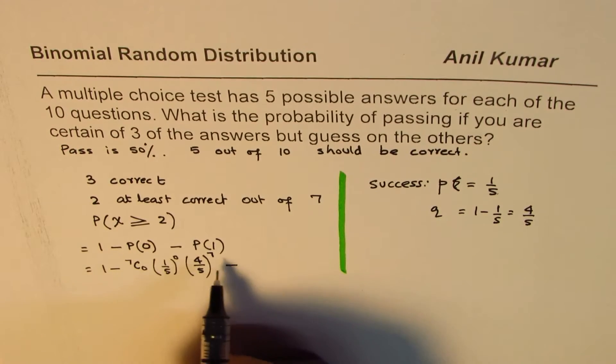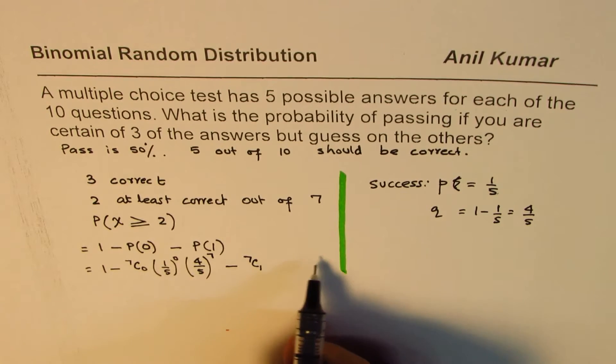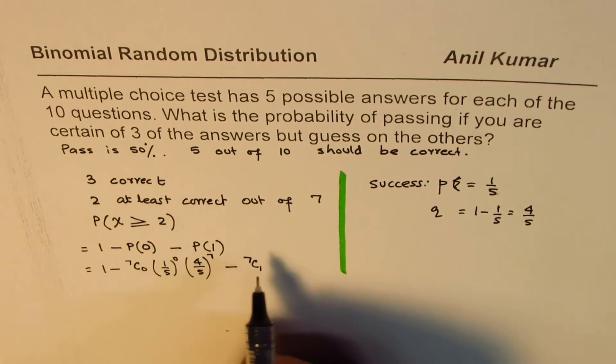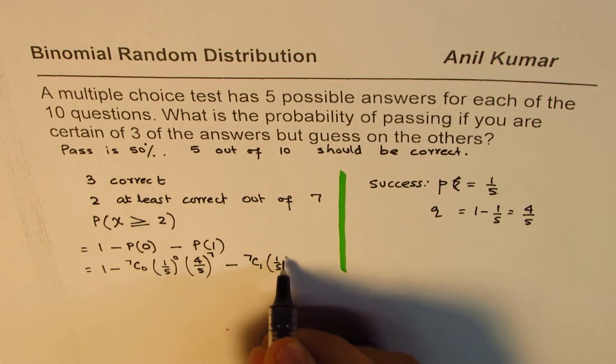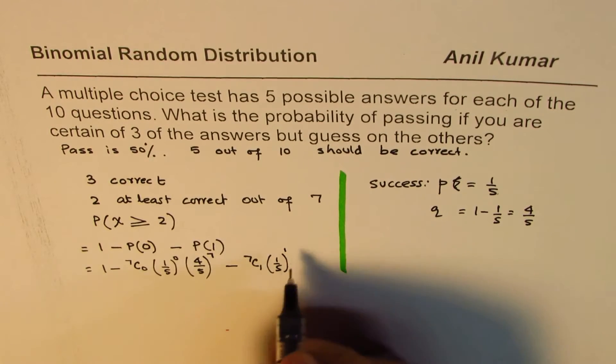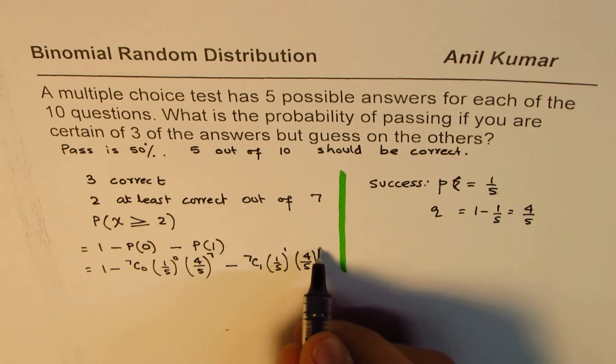The other one is when 1 is correct. So that means 7C1. This one could be occupying any of those 7 spaces. 7C1, 1 over 5 to the power of 1. And then 6 could be incorrect. So 1 correct. 4 over 5 to the power of 6.